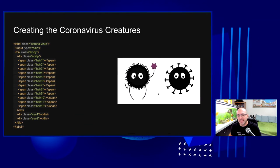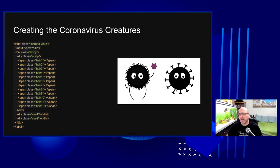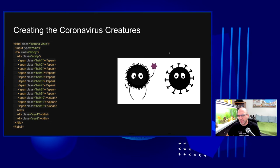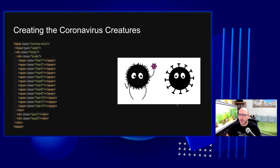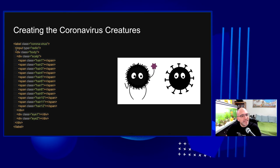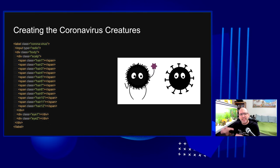My inspiration was nice to look at, but the final coronavirus creature ended up looking different, and I love it — it's truly my own. When I started creating the HTML for the creature, I treat HTML very carefully. I created a label HTML element with a class of 'coronavirus', and inside it I put an input type radio. The reason for using label and radio input is part of the game logic we'll discuss later.